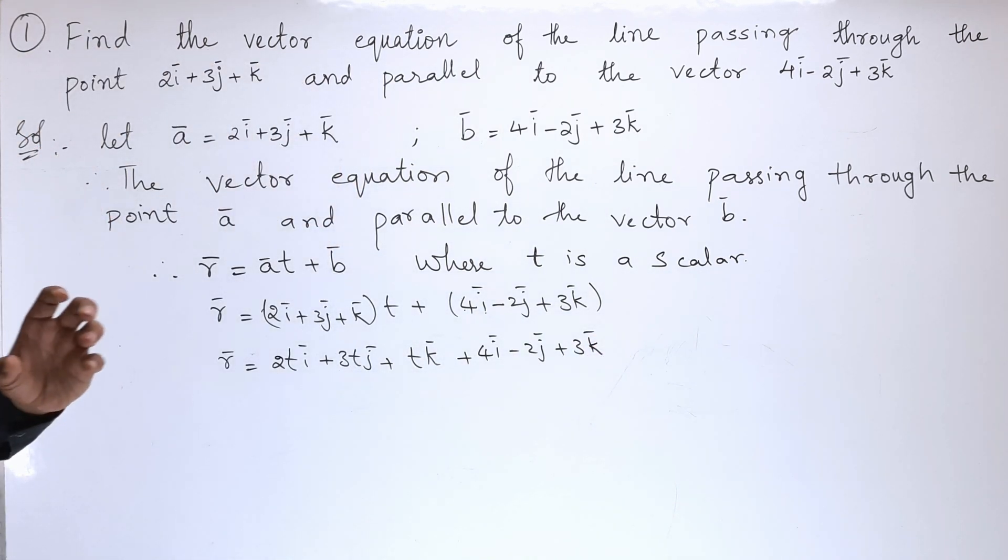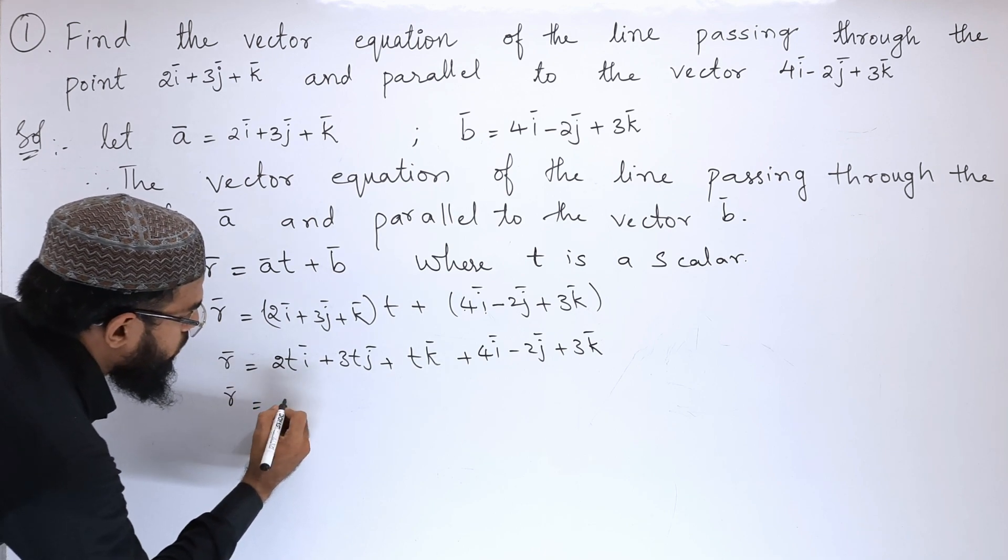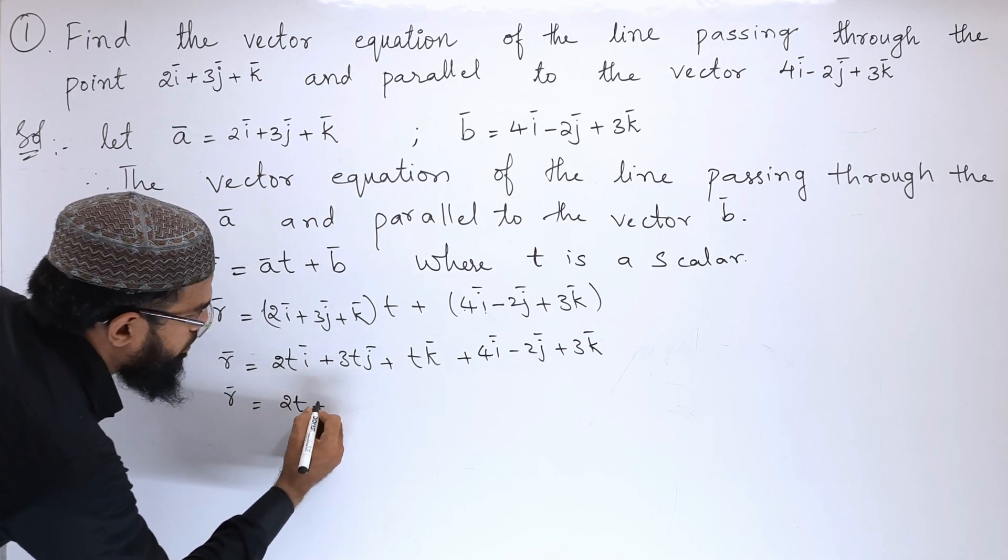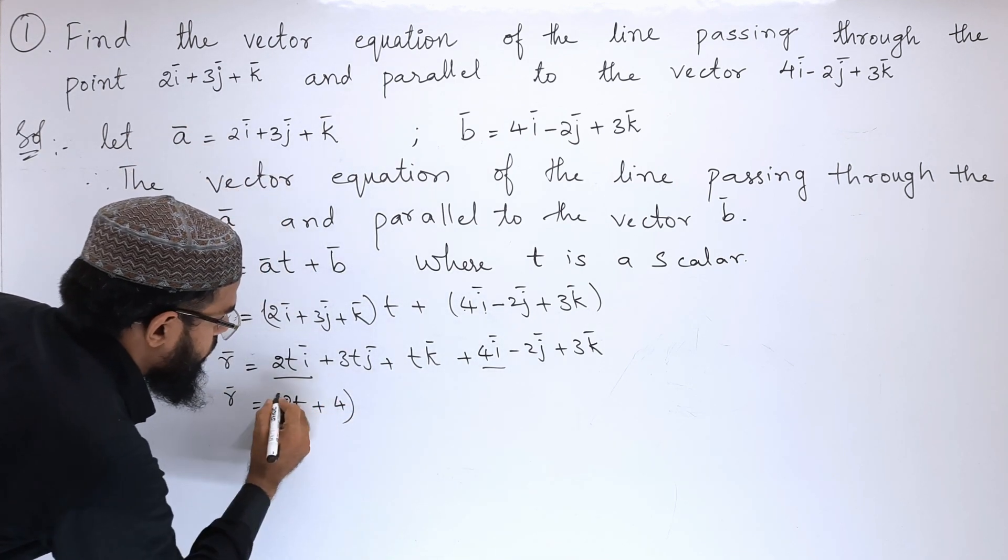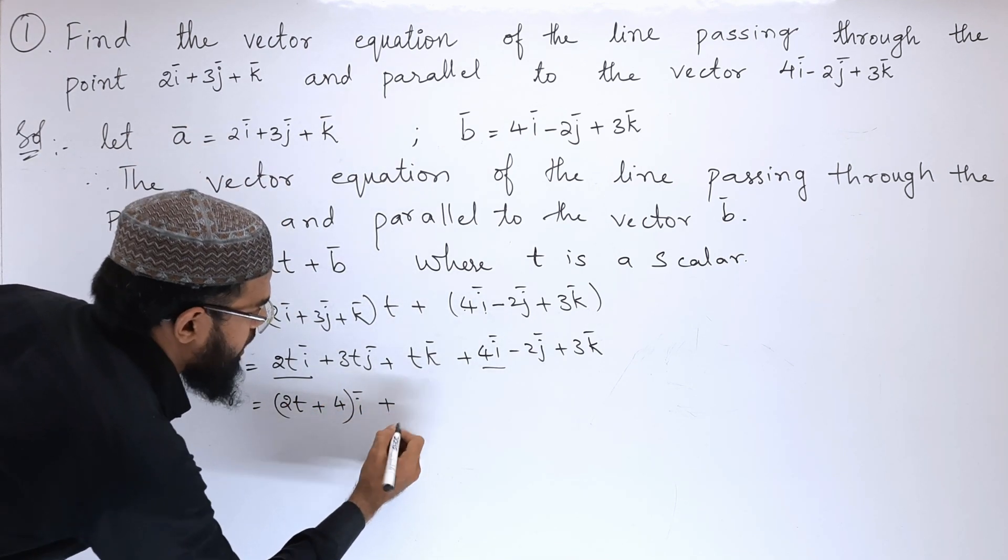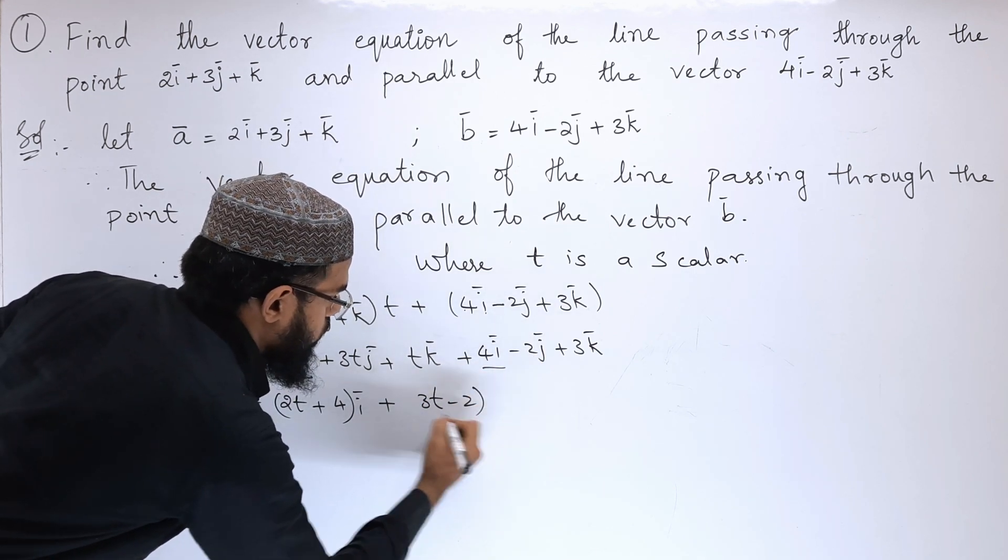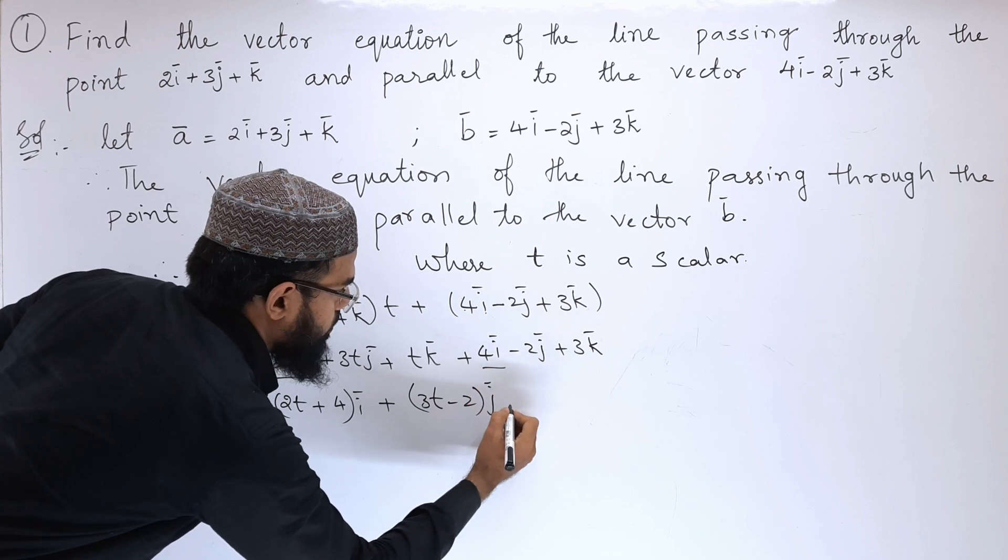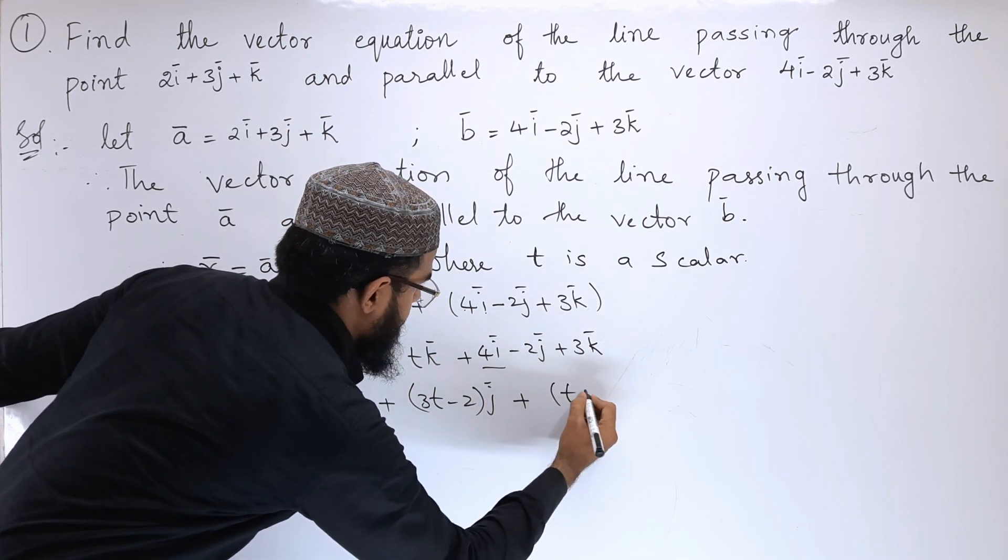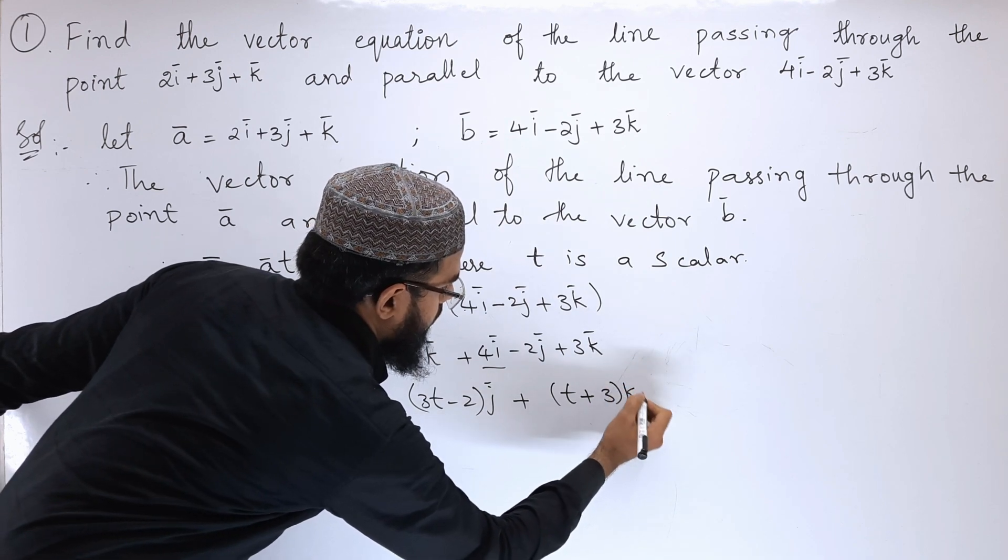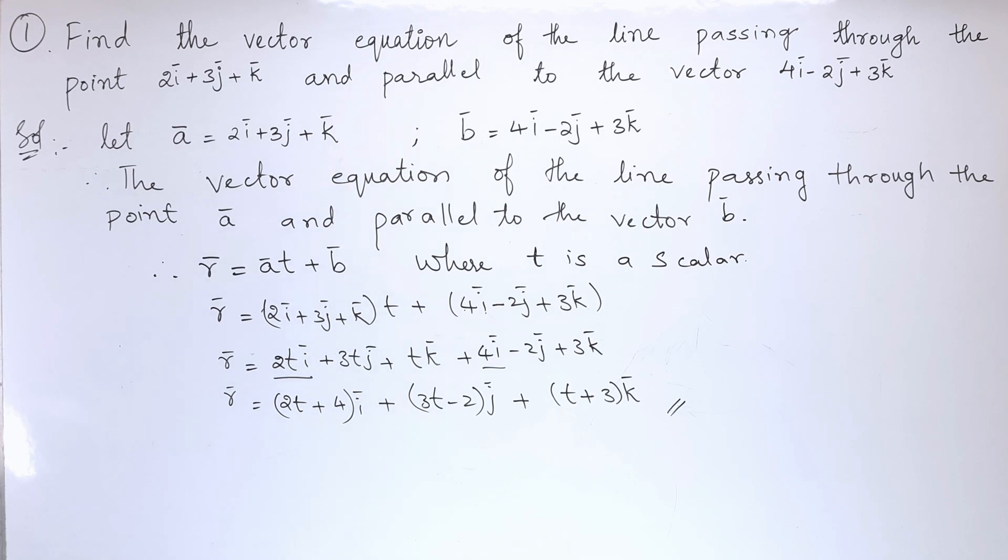Next, now we will take out i common. So, 2t plus 4 i cap plus 3t minus 2 j cap plus t plus 3 k cap. So this is the required vector equation.